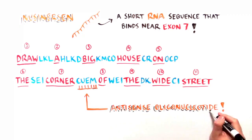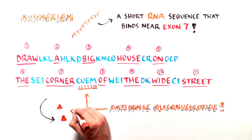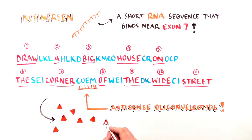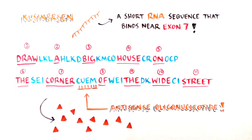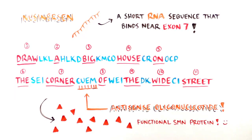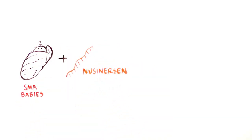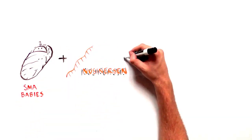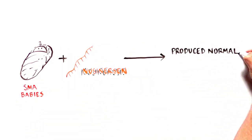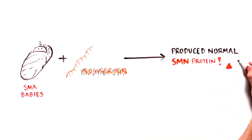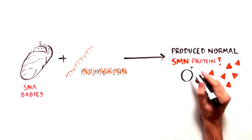Exon 7 is now included in the edited RNA message, which in turn generates full-length functional SMN protein. By preventing exon 7 from being skipped, nusinersen reverses symptoms in SMA patients.